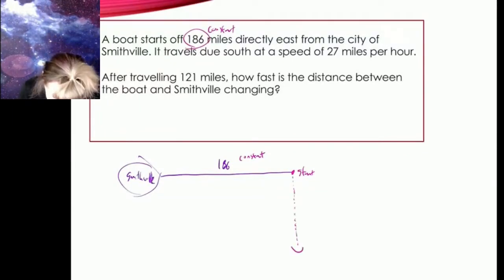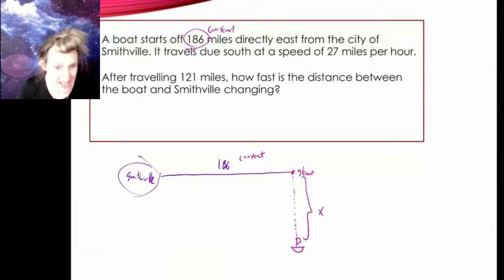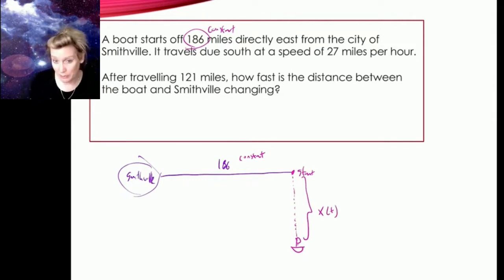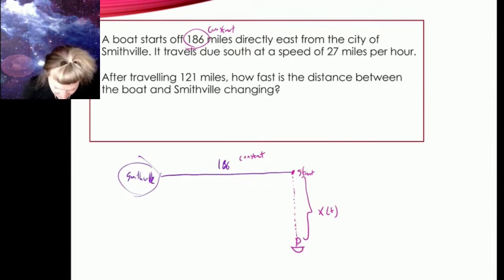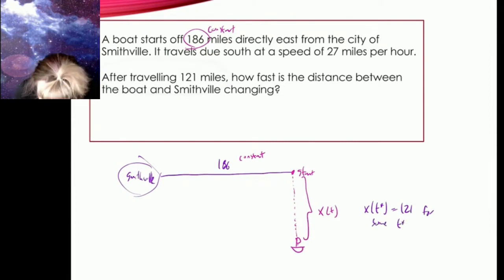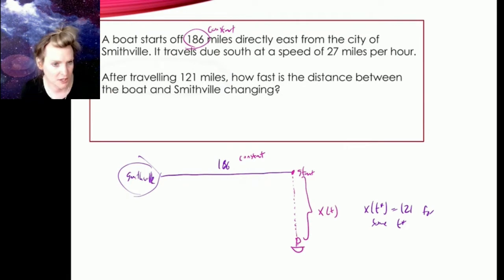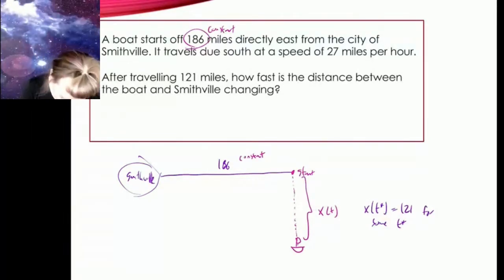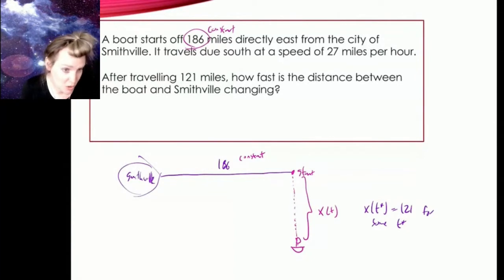Now the boat is traveling due south. Here's my boat, and it's traveling due south. This distance — let's call it x, or x(t) — is changing. I know that it's 121 based on the problem, but that's not always 121; it's just 121 for a moment. So x(t*) equals 121 for some t*. I don't care what the value of t* is; I just know that at some point in time the boat is 121 miles south.